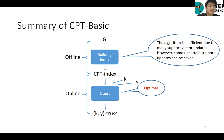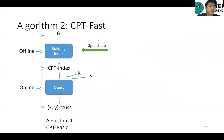However, some uncertain support updates can be saved. Thus, we propose the second algorithm CPT-fast, which speeds up the indexing process of CPT-basic construction by not updating some support vectors.